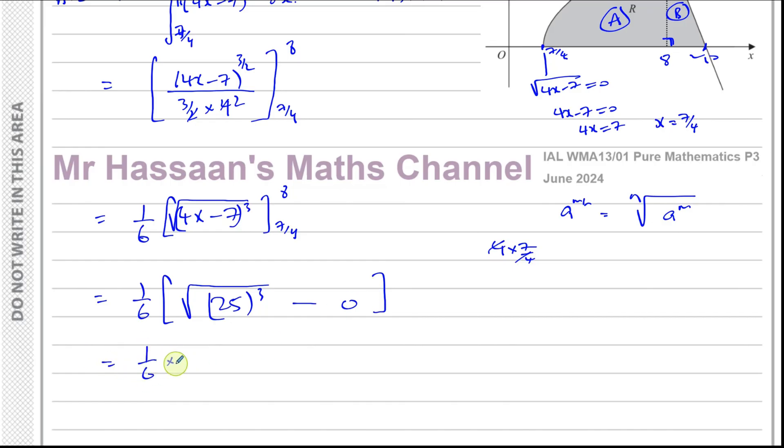So we've put the limits in now. You have 1 over 6 times, the square root of 25 is 5, 5 cubed is 125. So you're left with 125 over 6.